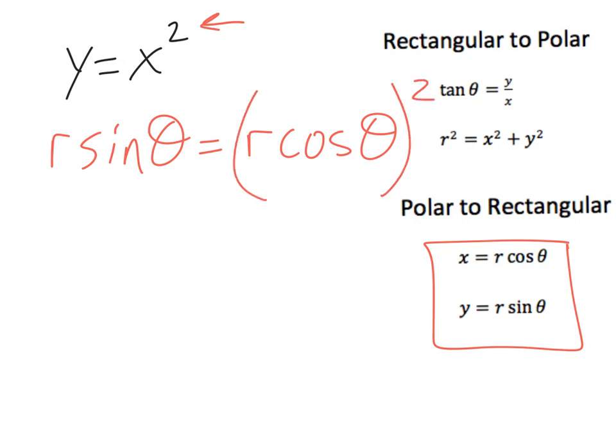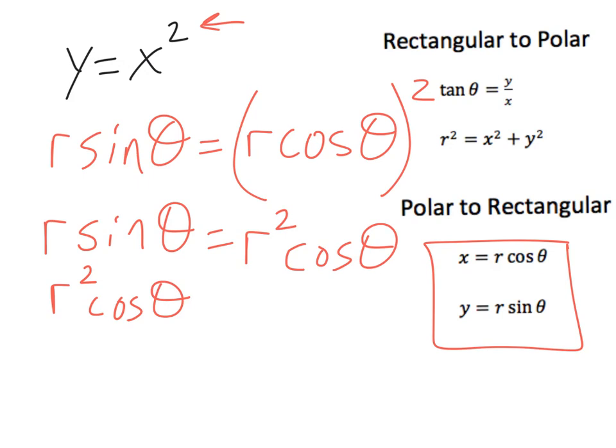And our goal is to, so here we have r sine theta is equal to r squared cosine theta. Our goal is to solve for r. So let me just rewrite this r squared cosine squared theta. I am so sorry that was a mistake. Thank you for catching it. Is equal to r sine theta.